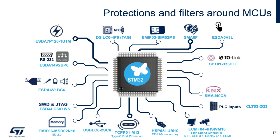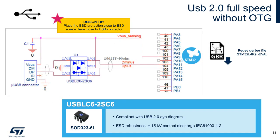The first example is the USB connector, which should be equipped with a protection device capable of protecting the microcontroller pins against ESD, while at the same time not introducing high capacitance to the communication lines in order to stay compliant with the USB eye diagram. The USB LC6 protection device can do the job, and you can find the recommended schematic and PCB layout at our reference designs for STM32L4 microcontrollers.